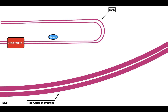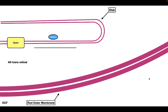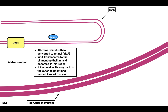Bleaching is basically a process that occurs shortly after rhodopsin absorbs a photon. What happens is the all-trans-retinal dissociates from rhodopsin. When this occurs, it converts rhodopsin into opsin. Now rhodopsin is colored red, and when all-trans-retinal leaves rhodopsin forming opsin, opsin has a pale yellow color. After all-trans-retinal leaves the protein, it is converted to retinol, or otherwise known as vitamin A. Vitamin A then translocates to the pigment epithelium and becomes 11-cis-retinal, which then makes its way back to the outer segment and recombines with the protein opsin.